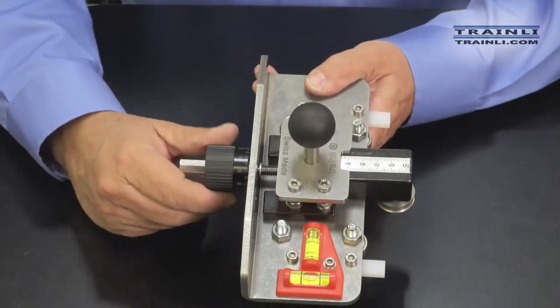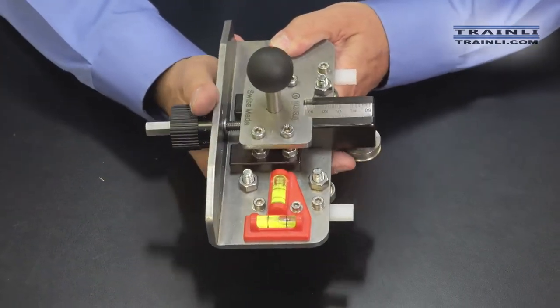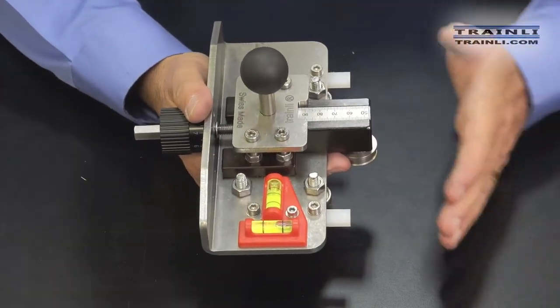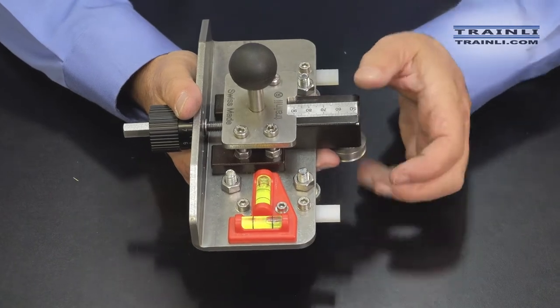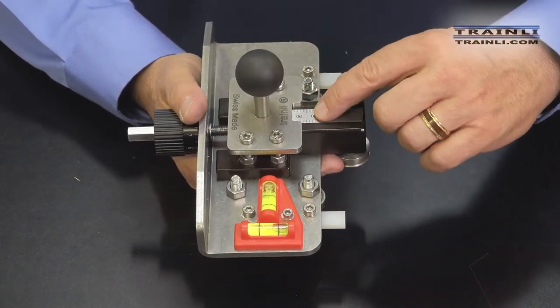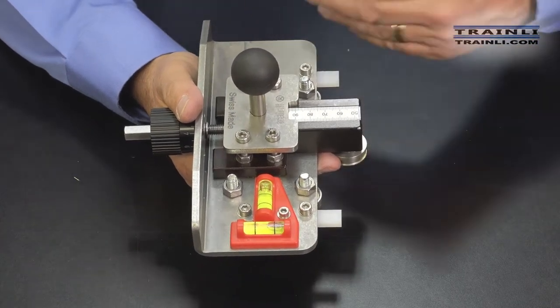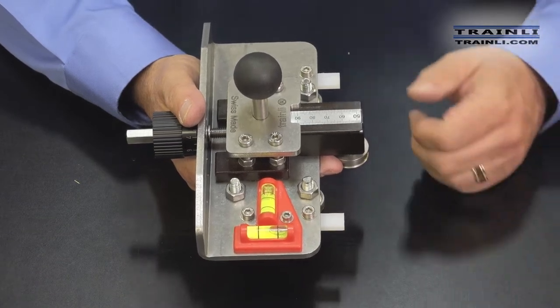And then, as you tighten this up, this creates the curve in the rails. And once you've gotten the right radius or curve that you want for your rails, you can remember whatever this numeric value is and use that to replicate that same curve again in the future.